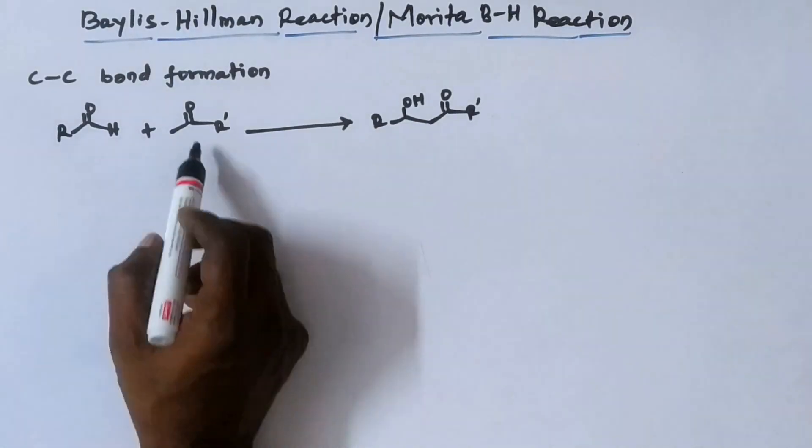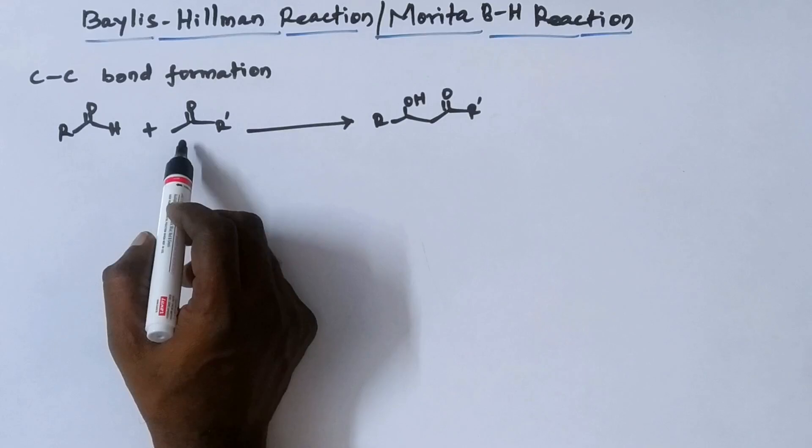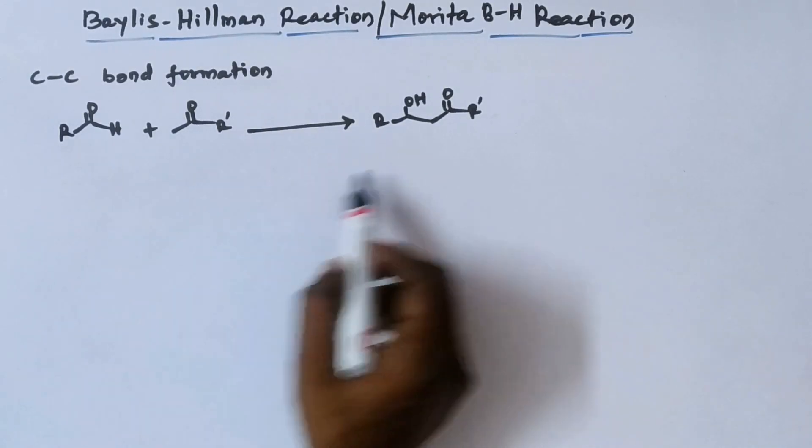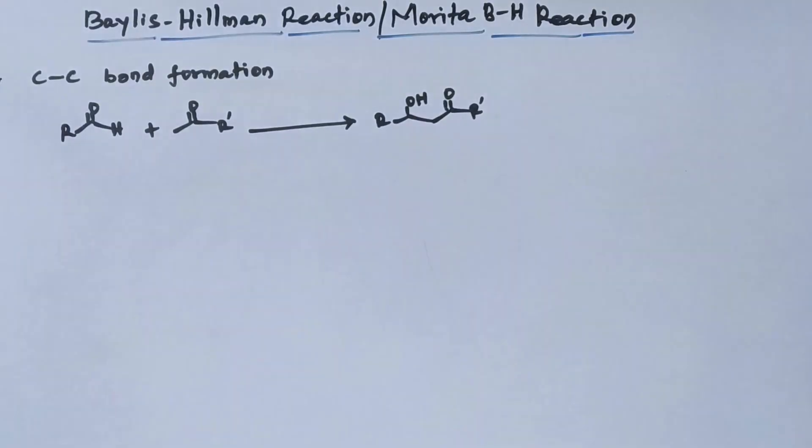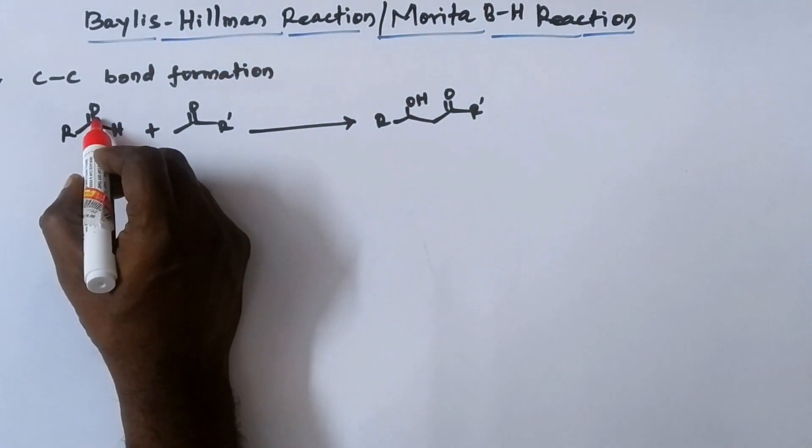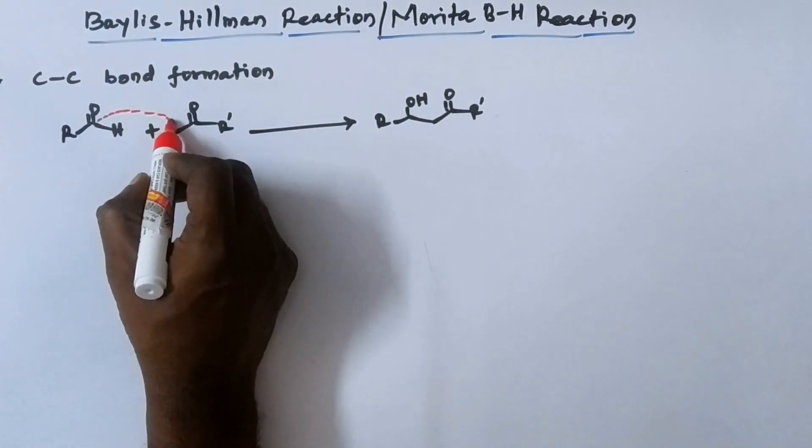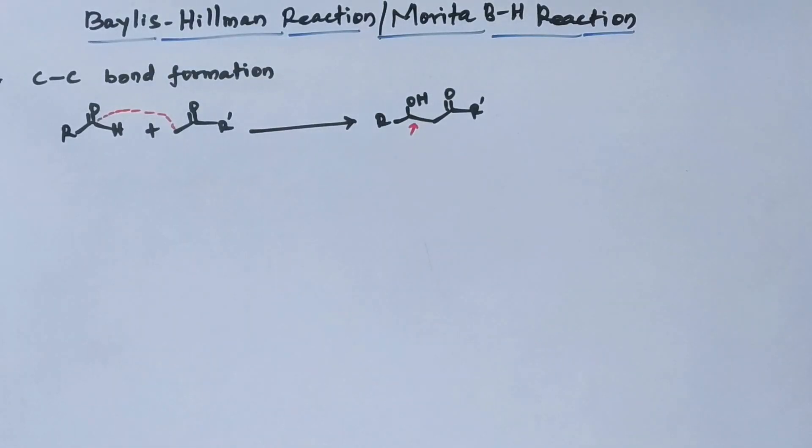An aldehyde reacting with another aldehyde or ketone bearing an alpha proton. If I put the right word, an enolizable carbon giving forth aldol, a beta-hydroxy carbonyl compound. You get a new carbon-carbon bond between the carbonyl group of the aldehyde and the enolizable carbon. You get new carbon-carbon bond like this.